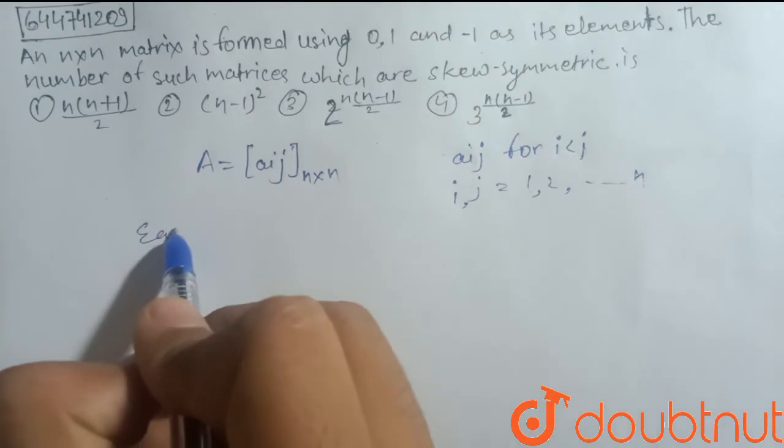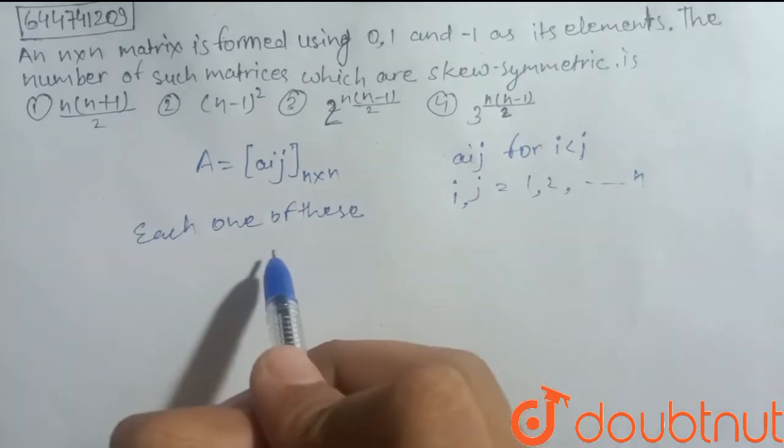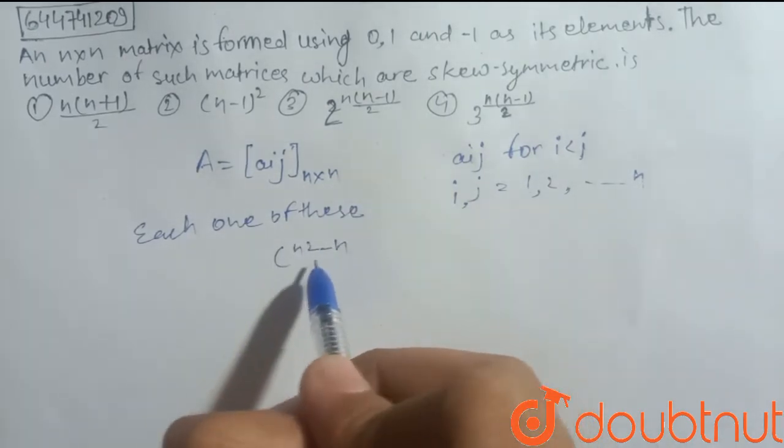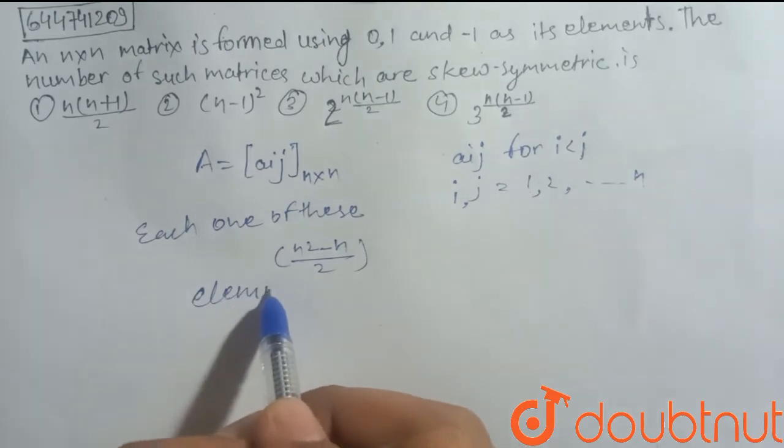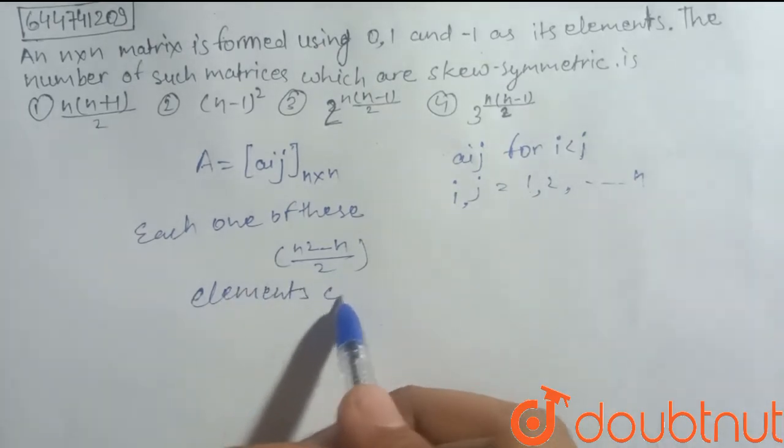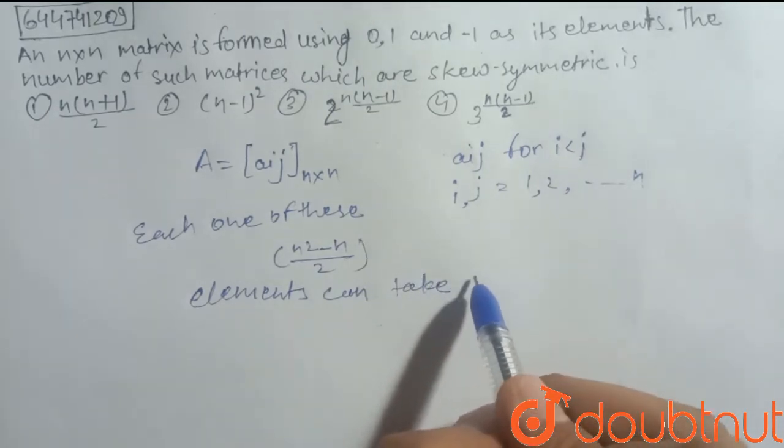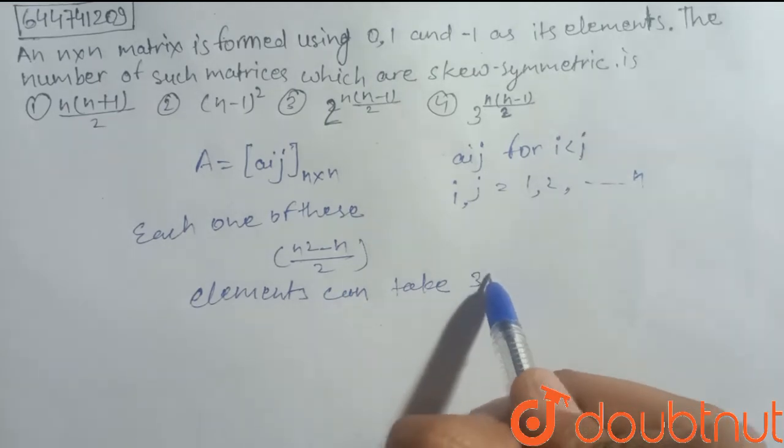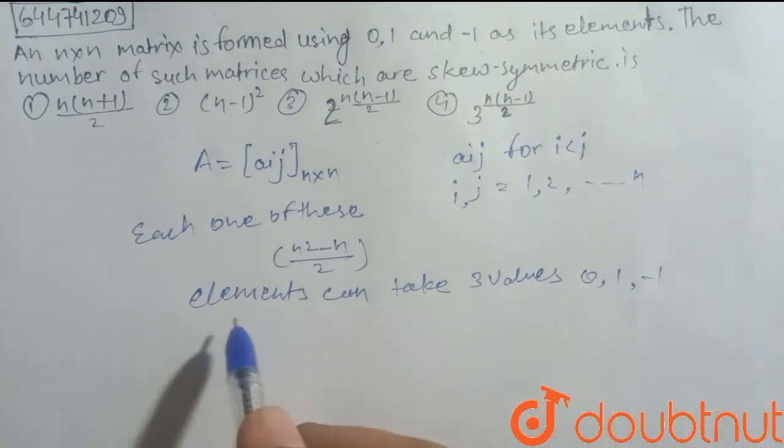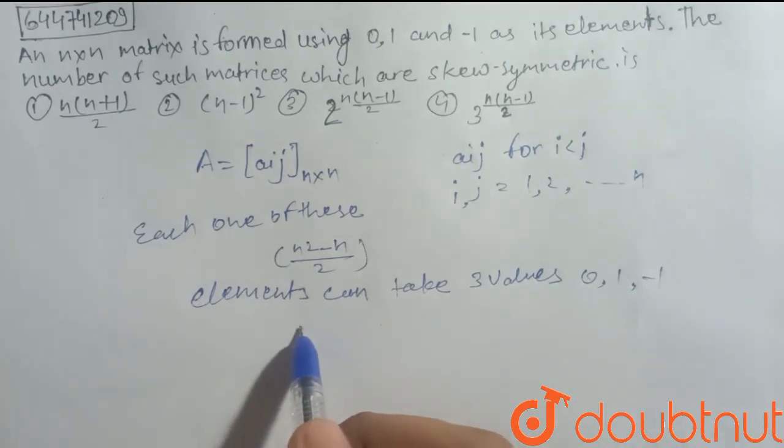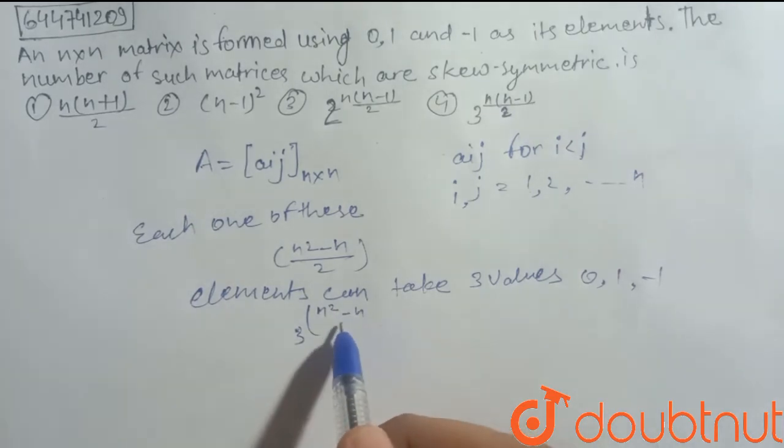There are n square minus n by 2 such elements. Each one of these elements can take three values: 0, 1, and minus 1.